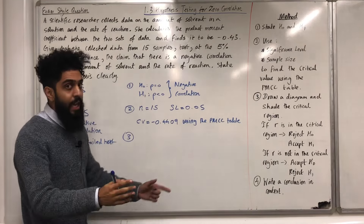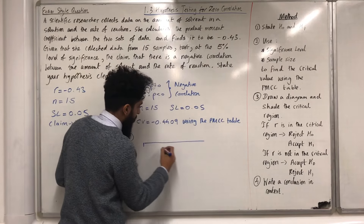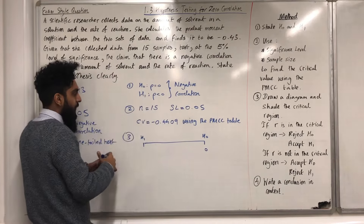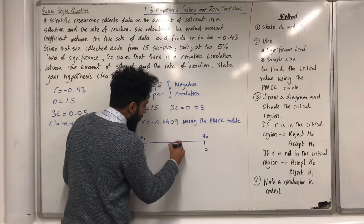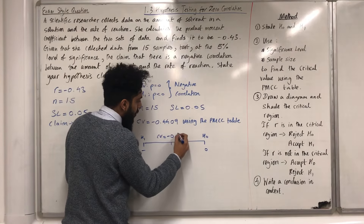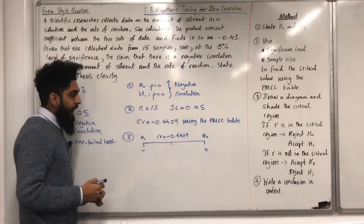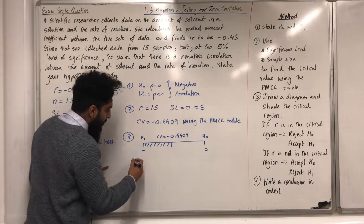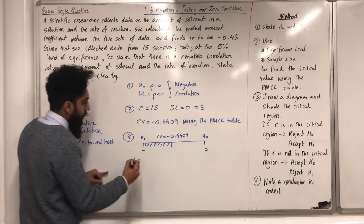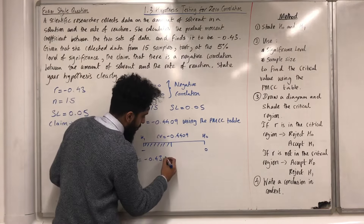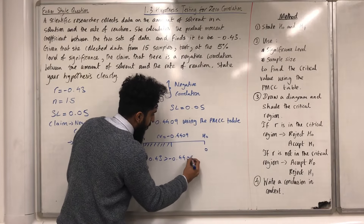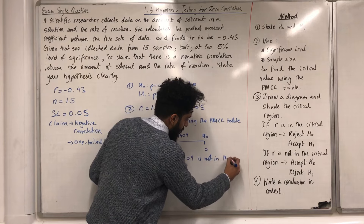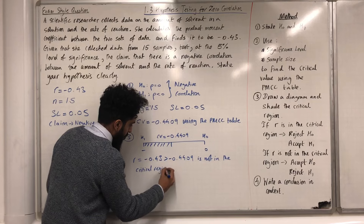Step 3: draw a diagram to model this situation. H0 represents rho equal to 0, so I put a 0 here. H1 represents rho less than 0 — a negative value — so I put a minus here. CV equals minus 0.4409 in the middle. Anything that is the critical value or less represents the critical region. My sample PMCC R equals minus 0.43, which is actually greater than minus 0.4409, so the R value is not in the critical region.